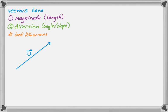Here's a vector. It's got a starting point and an ending point. The arrow end is the ending point, or the terminal point. The part that doesn't have the arrow is called the initial point of the vector.